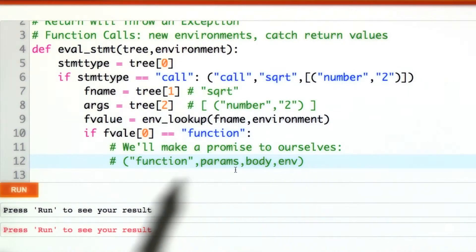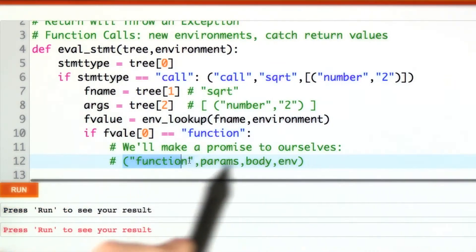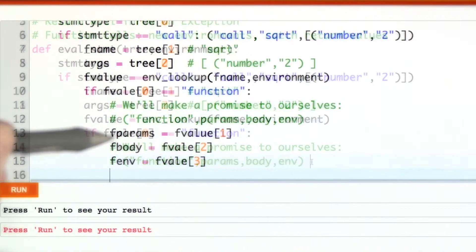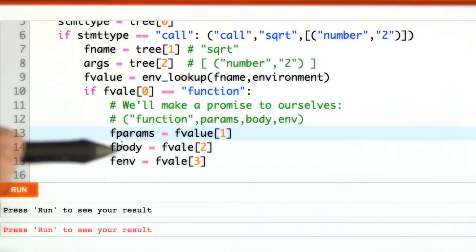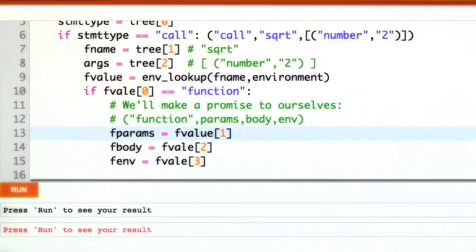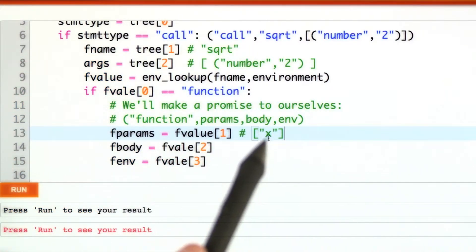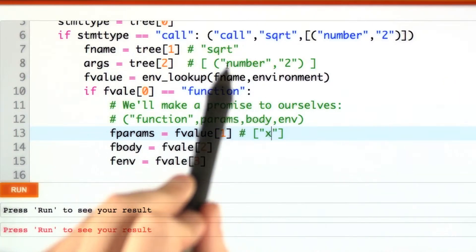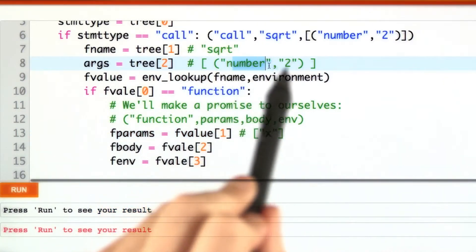For now, I'm just going to promise that this is how functions will turn out, and later in the next step, we'll make that promise true by having function definitions produce these four tuple values. So we'll just pull out the function parameters, the function body, and the function environment. For example, if we're calling square root, square root's official formal parameter name might be x, when we passed in the particular actual argument 2.